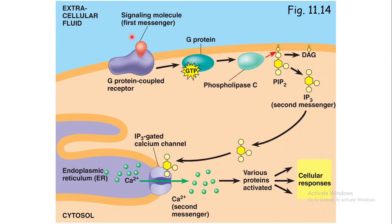One of the most important examples of ligand-gated ion channels is the calcium ion channel present on the endoplasmic reticulum. This is part of a whole pathway — the protein kinase C pathway, also known as the IP3 pathway — but in this video I'm going to focus specifically on how this ligand-gated calcium channel opens.